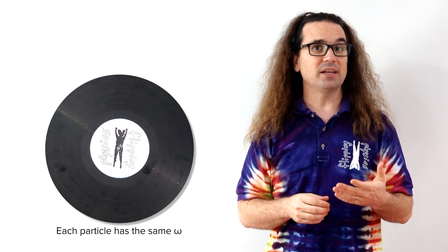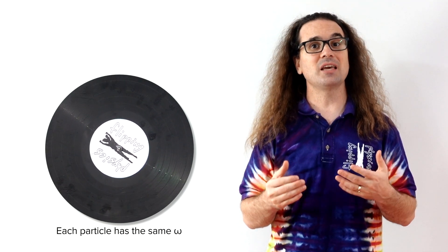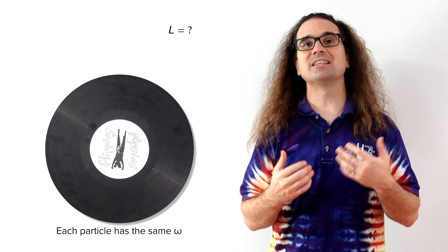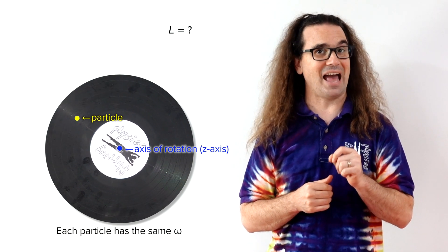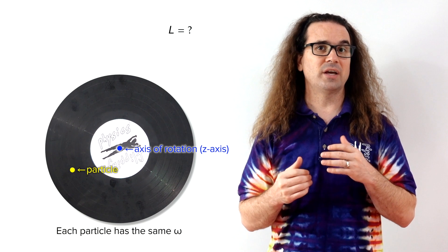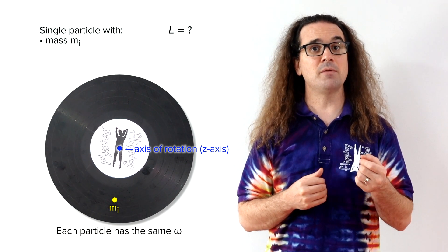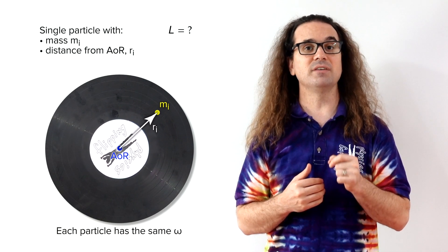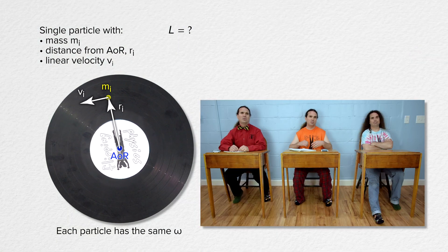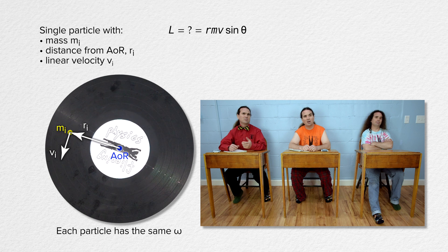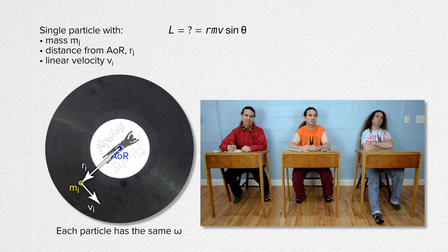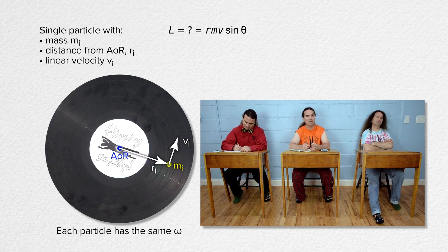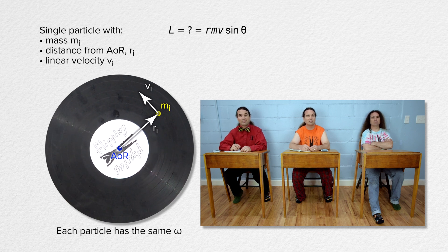Each particle of the rigid body rotates in the xy plane of the screen with the same angular speed omega. What is the magnitude of the angular momentum of a single particle of the record about the vertical z-axis which is out of the screen? You can assume each particle has mass m sub i, is a distance r sub i from the axis of rotation, and is moving with linear velocity v sub i. The magnitude of the angular momentum of a particle equals r, the distance from the axis of rotation to the particle, times m, the mass of the particle, times v, the linear speed of the particle, times the sine of theta, the angle between the position vector and the velocity of the particle.